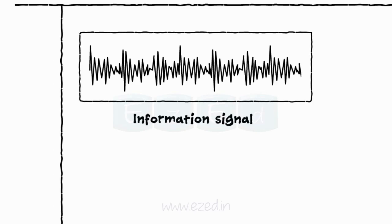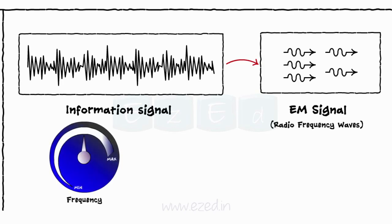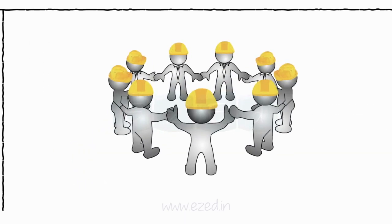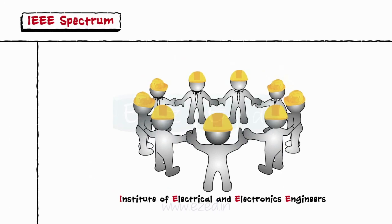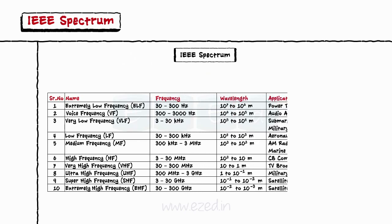Next, we learn about IEEE spectrum. The information signal is first converted into an electromagnetic signal or EM signal and then it is transmitted. These EM waves are also known as radio frequency waves. The frequency of this EM wave can vary from very low to a very high frequency. The entire range of frequencies of EM waves is called as electromagnetic spectrum or EM spectrum. These frequencies were decided by the Institute of Electrical and Electronics Engineers, an association of engineers known as IEEE. The following table represents different frequency spectrums along with their applications.